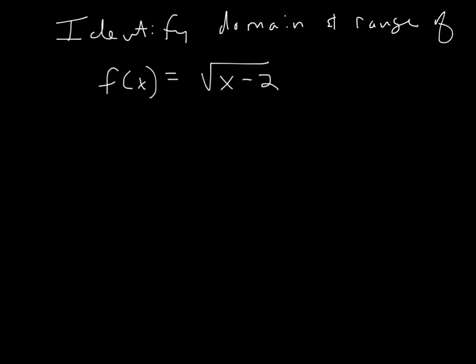Let's try another one where it's not just the basic square root of x function. I'm going to put a minus 2 inside this time. If we think back to when we were graphing shifts, we already know that when we mess with the inside of a function — in this case a square root function — it's going to shift the graph right and left. When it's minus, it actually goes to the right. But you don't have to memorize that. We're going to make a t-chart again.